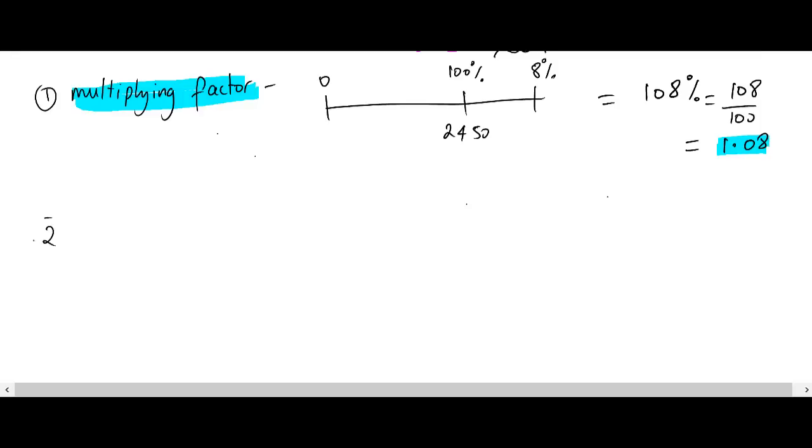So, step number 2, you're going to do 2450, which was the original price of the ticket, and you're going to multiply this by the multiplying factor, which is 1.08. Next, all you have to do is get a calculator, and you're going to type in 2450 times 1.08, and that gives us 2646 euros.